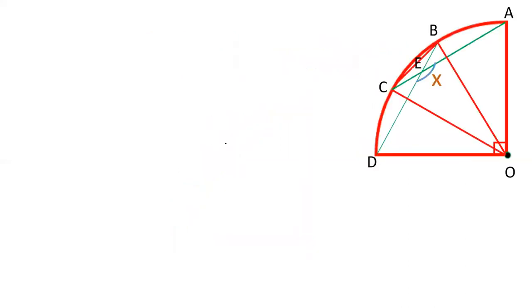Join three lines: center join to B, that's OB. Center join to C, that's OC. Join BC also. Now, there are three arcs AB, BC, and CD which are equal. Arc AB equals arc BC equals arc CD.